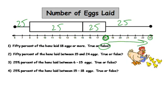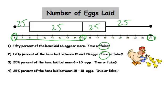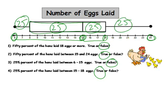50% of the hens laid between 15 and 24 — that's true. 25% of the hens laid between 6 and 15 eggs — that's false, because 15 to the minimum actually represents 50%. 25% of the hens laid between 15 and 18 eggs — that's true. So remember, a boxplot takes all the data and breaks it into quarters, and the box represents the middle 50% of that data. That's how you read a boxplot.